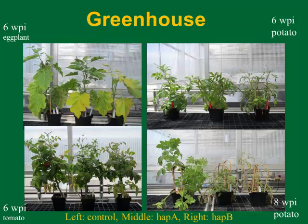Julian reported their greenhouse study this morning, where the symptoms appeared more yellowish — I'm not sure if that's because of the different variety used. For the potato, six weeks after inoculation, the healthy one is pretty healthy, and both infected ones are showing foliage symptoms, with B seeming more severe. At eight weeks, the B-infected one died. Julian's research, in both greenhouse tomato and fieldwork, kind of supports that haplotype B seems more aggressive.